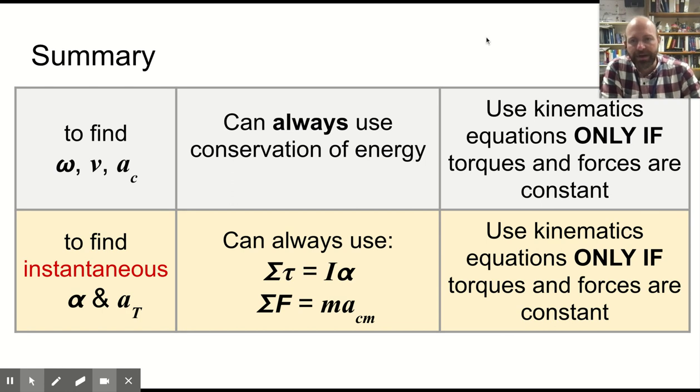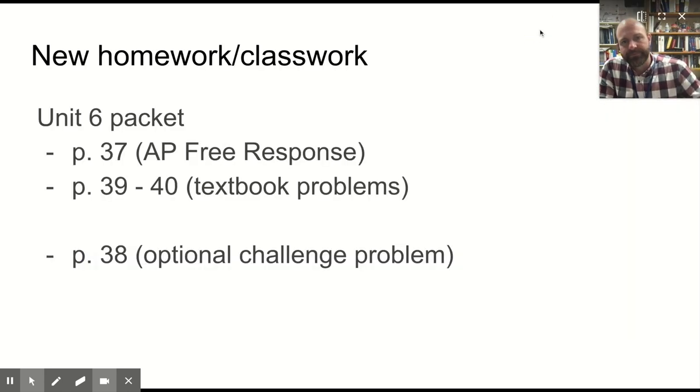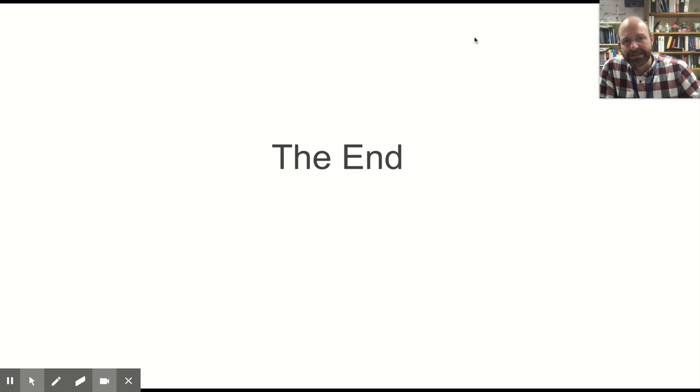All right, in summary, you can find omega, V, and A centripetal. So the angular velocity, the translational velocity, and the centripetal acceleration using conservation of energy, ignoring kinematics unless things are constant. But then you will need to use the net force and the net torque equations to find the instantaneous alpha or angular acceleration and translational acceleration of the tip or the center of mass or whatever it is. This is the work we were working on in class. And that's that. Hope that helps.